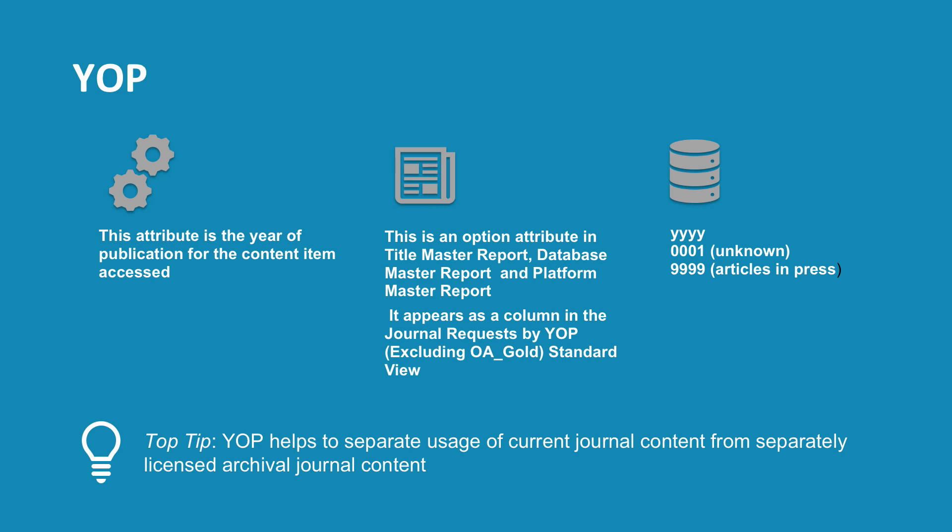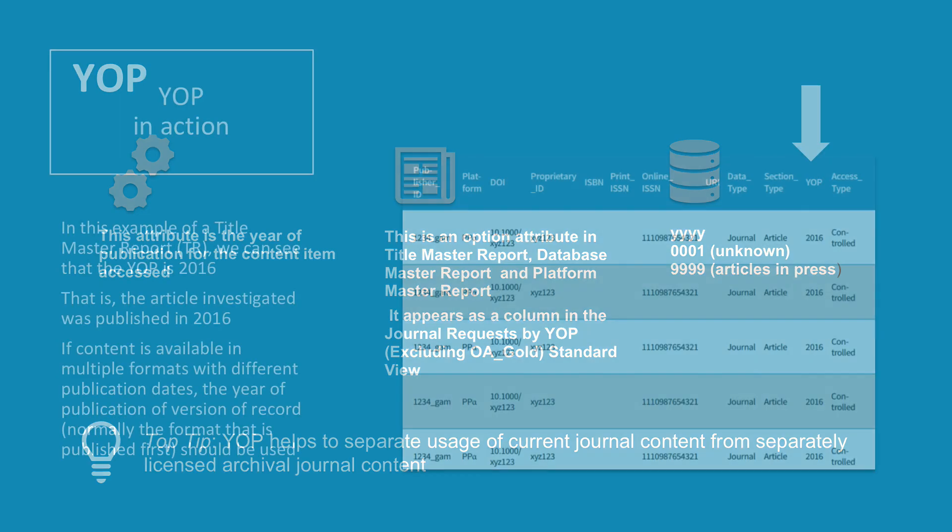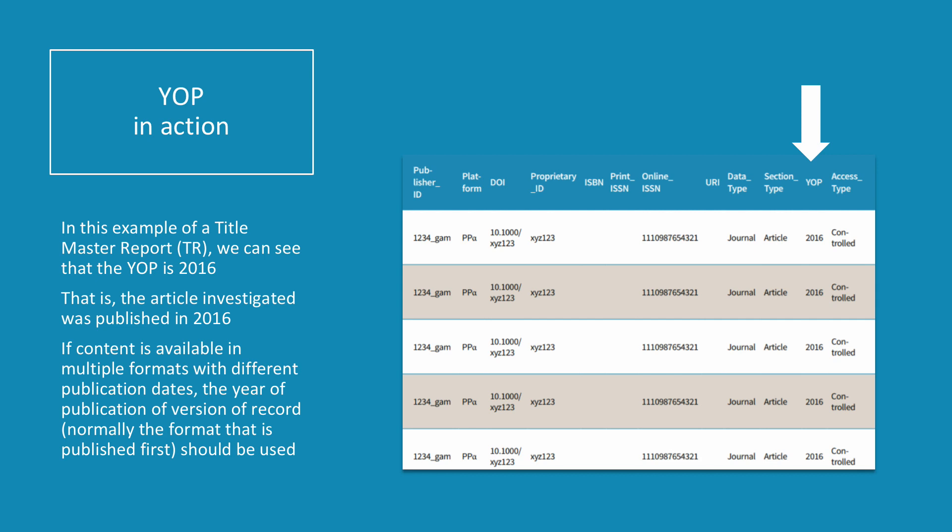Our top tip is that very often a library may subscribe to a journal publisher's current content, sometimes called the front file, under one licence, and may also have paid for another separate licence for access to the publisher's archival content. Archival content is often older journal content originally published in print but now digitised. YOP enables librarians to see how much usage comes from the current content and how much from the archive, and the cost per download for each can then be calculated. In this example of a Title Master Report, we can see that the YOP is 2016.